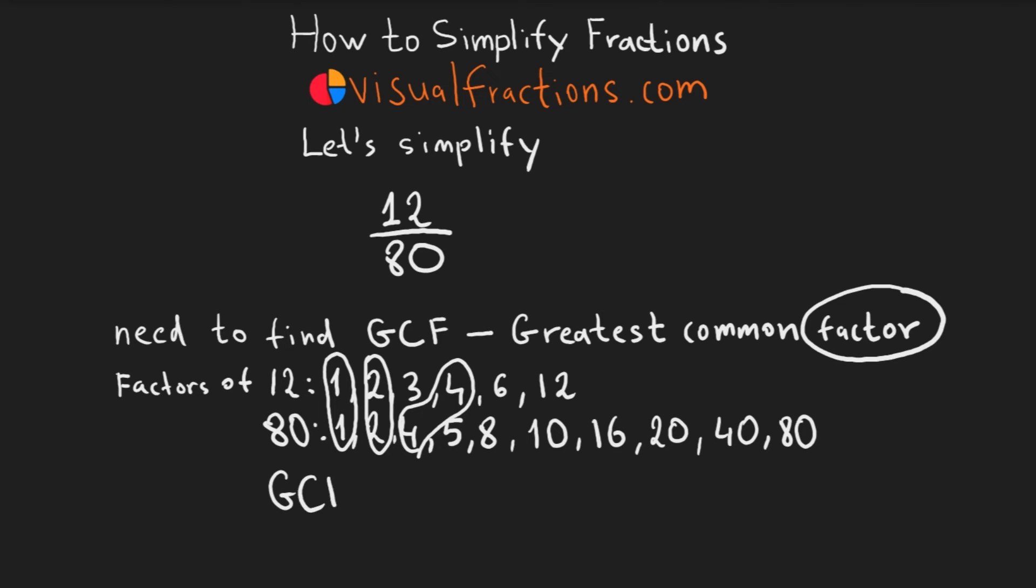Among these, the greatest is 4, which is our GCF. Now that we've identified the GCF, we can simplify 12 80ths.